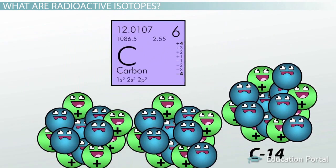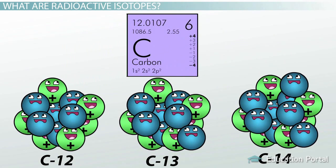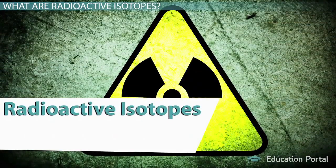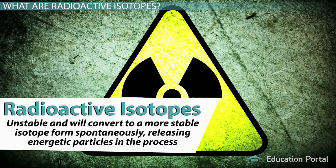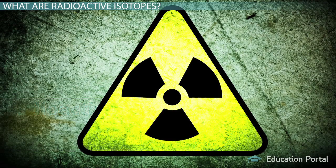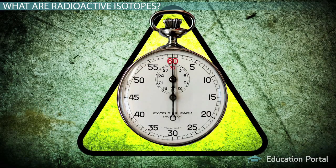So, all elements can have multiple isotope forms, but some of these isotope forms are even more special and are referred to as radioactive isotopes. These isotopes are unstable and will convert to a more stable isotope form spontaneously, releasing energetic particles in the process.